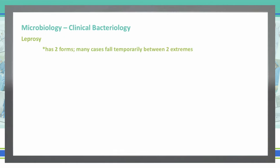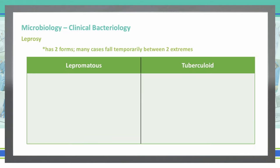As far as leprosy goes, there are about two different forms that you can see. A lot of times both of them will appear, but they'll temporarily fall between these two extremes before they kind of congeal back together. So there's the lepromatous and the tuberculoid forms for leprosy.